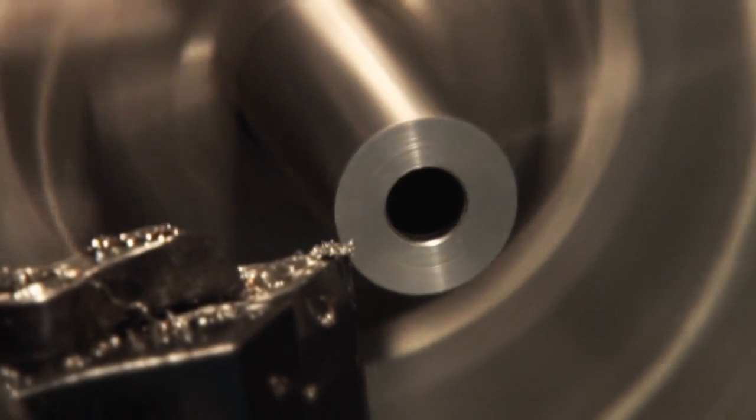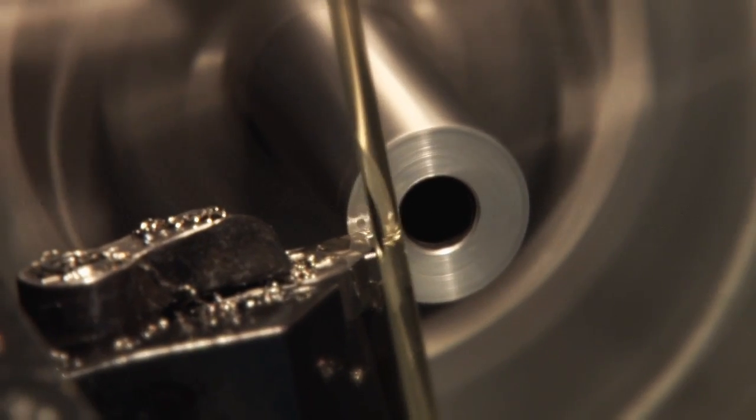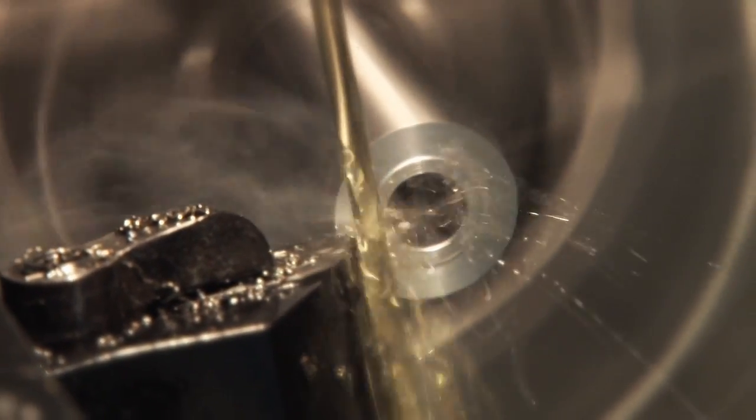The first operation and turning tool faces the barrel and puts a radius on the outside edge to minimize coating wear.